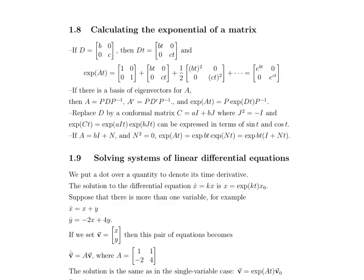Replacing D by a conformal matrix C, which is AI plus BJ, where J squared is equal to negative times the identity matrix, negative 1 times the identity matrix. And the exponential of CT is equal to the exponential of AIT times the exponential of BJT. That can be expressed in terms of sine T and cosine T.